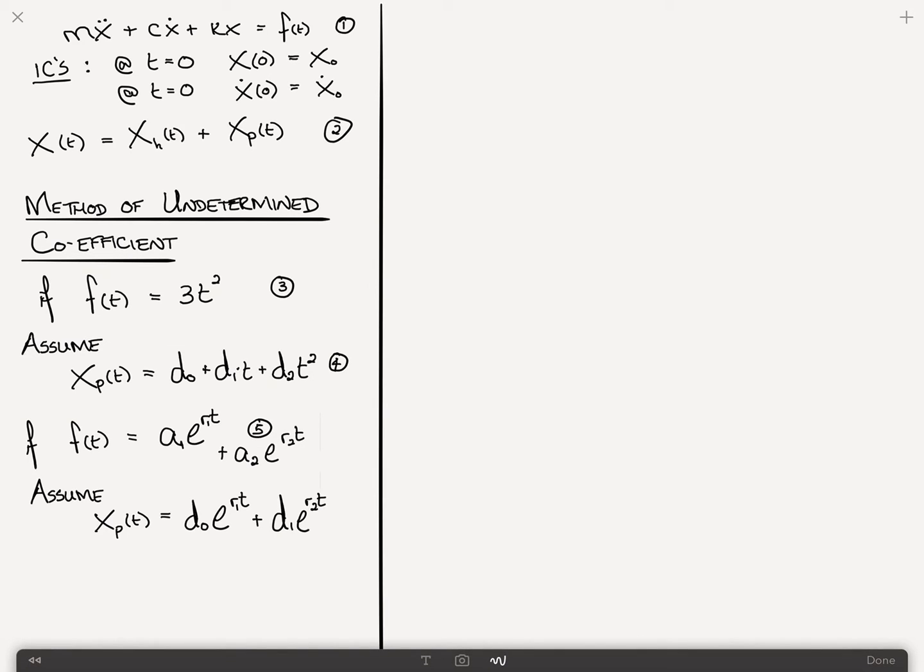But what we really want to look at is what happens when you've got some sort of a harmonic forcing function. So f(t) is something like a times cosine rt. We'll call this equation 5, 6, 7. And this is a problem that comes up a lot in introductory vibrations problems, and that's why I thought I would tackle this one specifically.